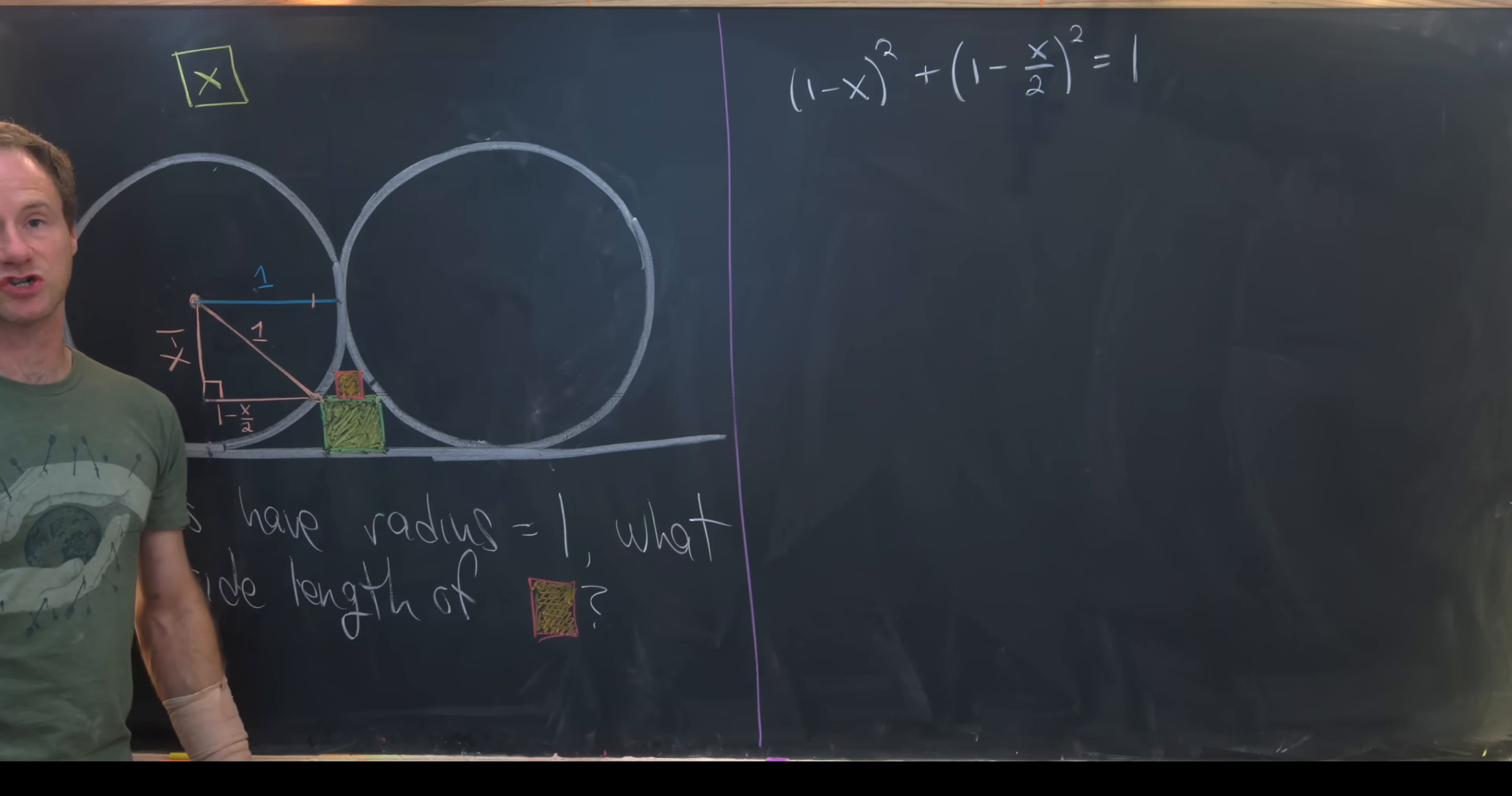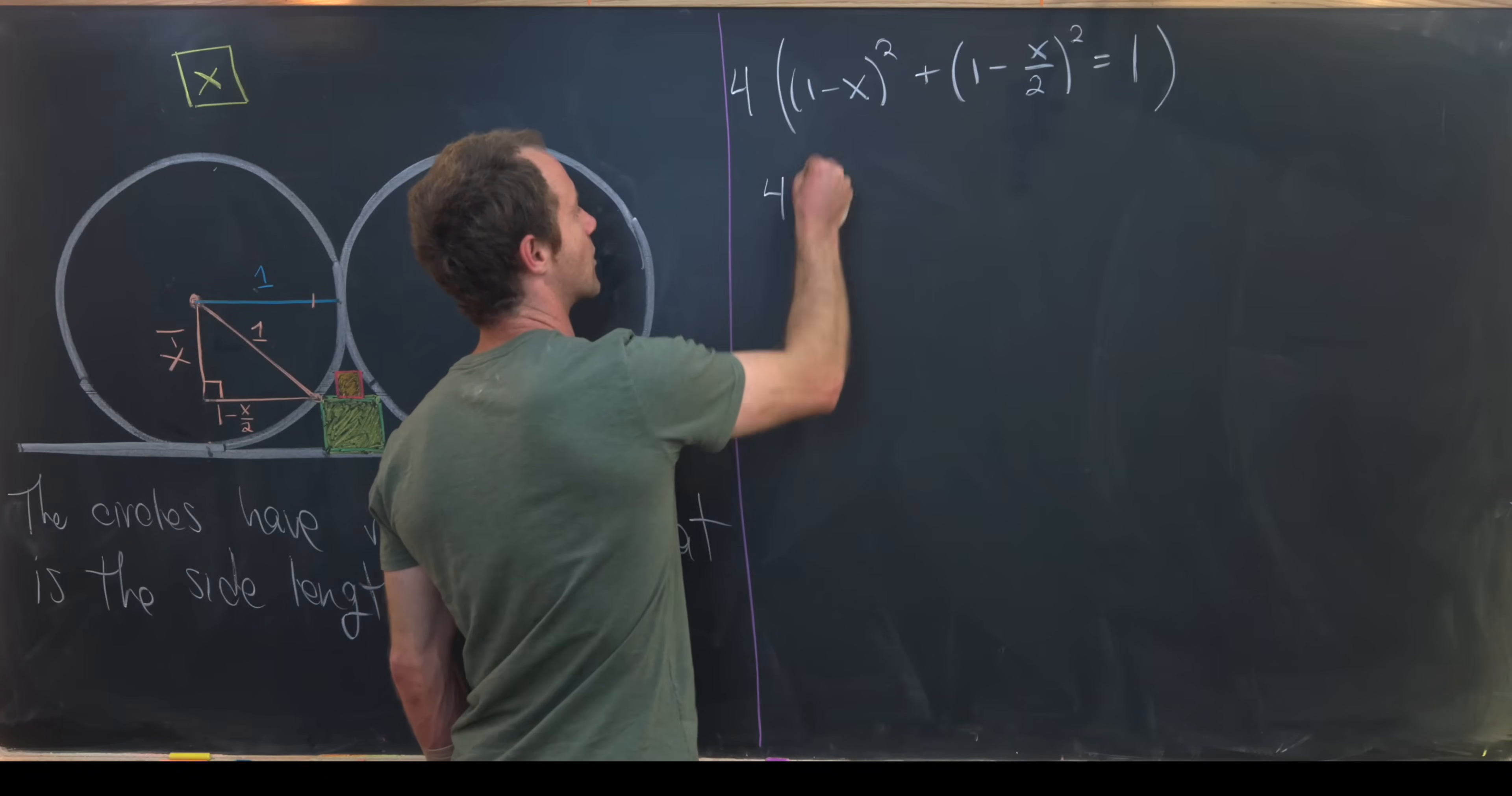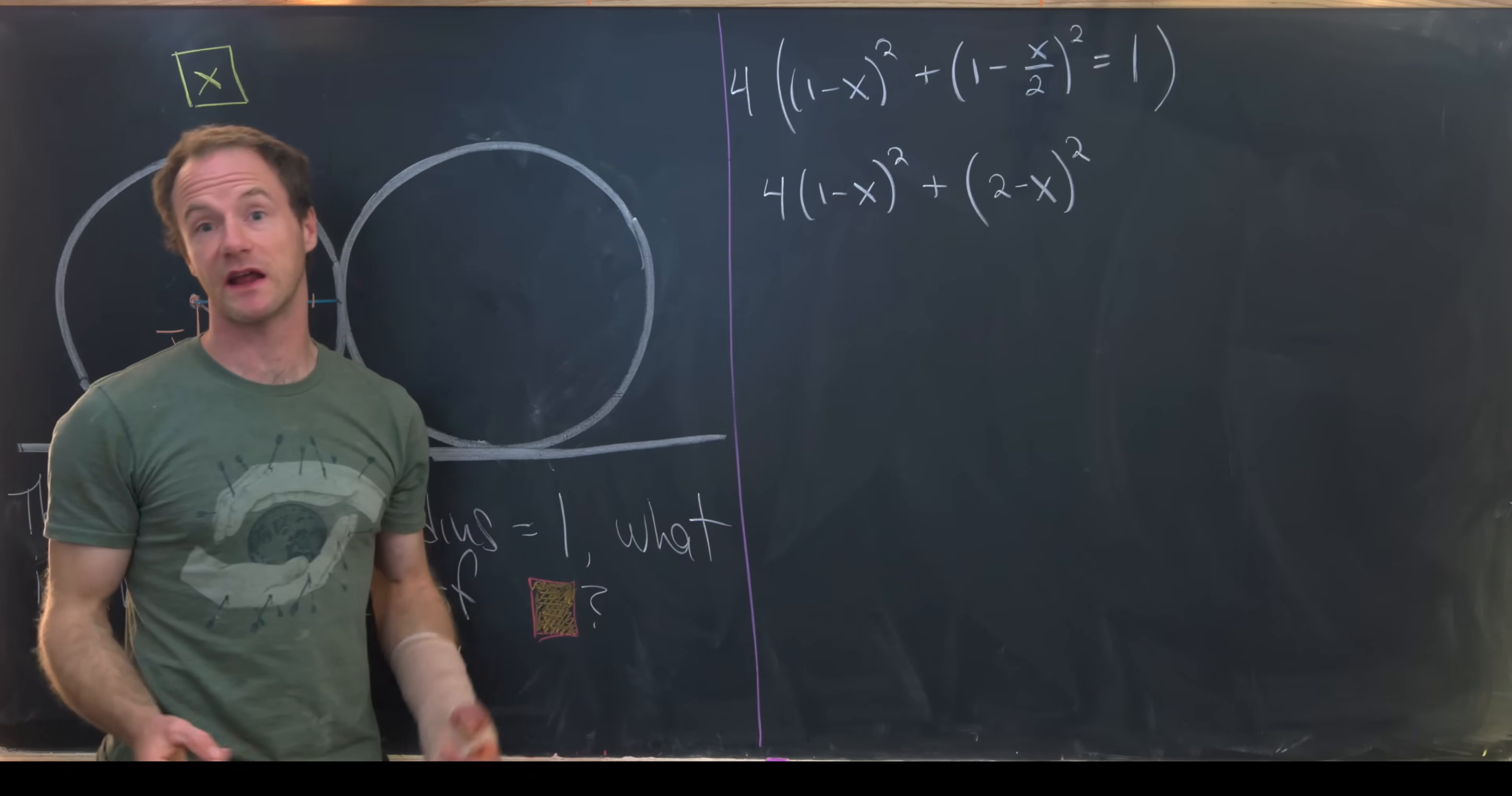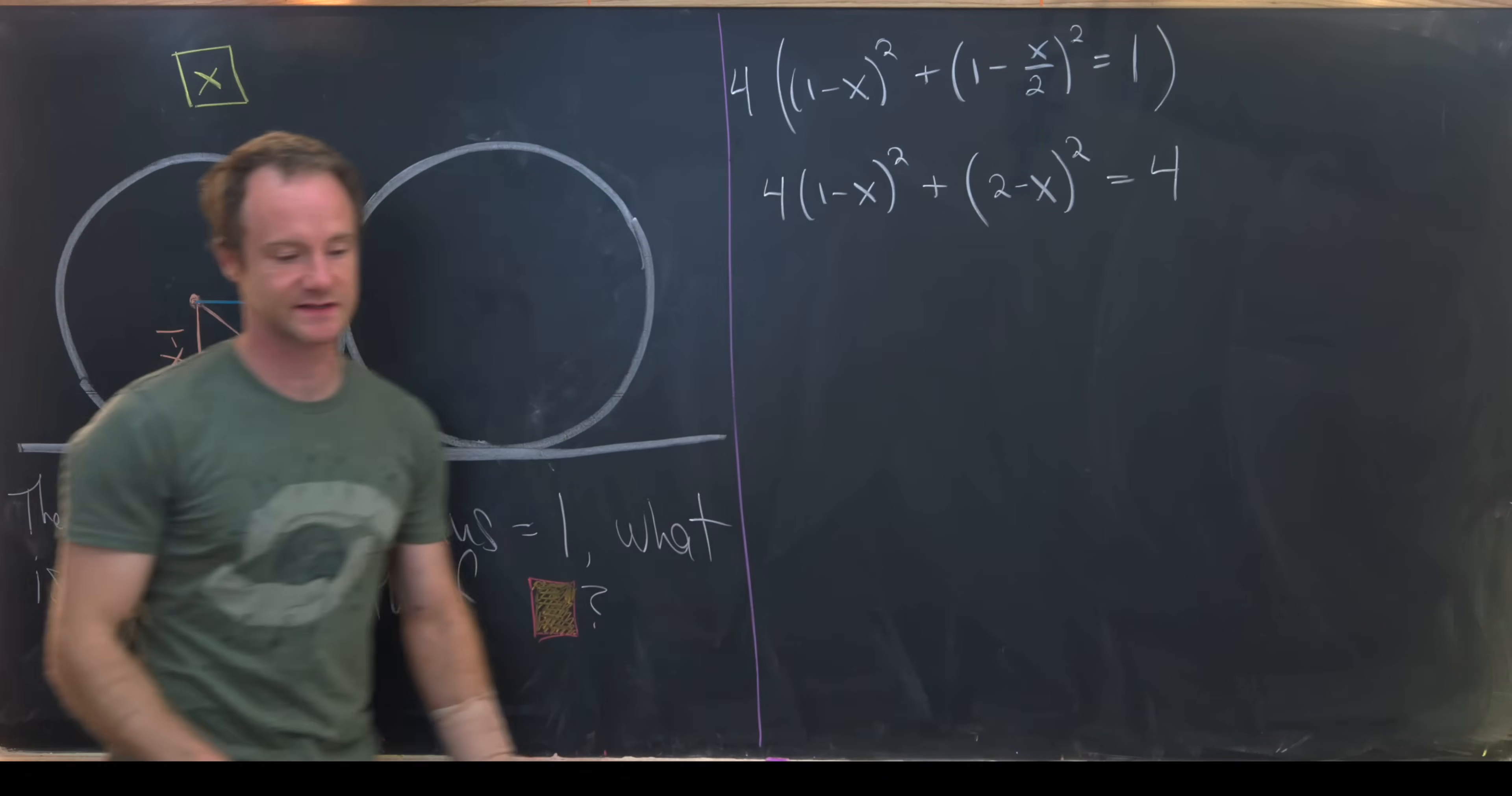Now that's going to give us a quadratic formula that we can solve for x. I want to simplify it a little bit first. I'm going to multiply this whole thing by 4. So multiplying that whole thing by 4 will give me 4(1 - x)² + (2 - x)². Notice if I bring the 4 into this thing that's being squared, I need to take its square root, so I turn it into 2. That gives me 2 times 1 and 2 times x over 2. That cancels. And then I have 4 over there on the right-hand side of the equation.